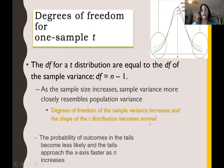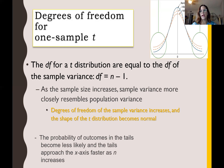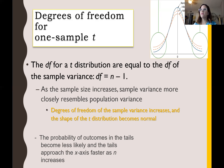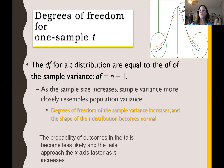An important thing to think about is our degrees of freedom, because now we're really relying on degrees of freedom since we don't have that population variance. With the T statistic, our distributions are based on degrees of freedom, whereas with the Z test there was one distribution — the unit normal distribution. Now we have a distribution for every single sample size, which is every single degrees of freedom. Degrees of freedom is N minus one, and the sample distribution will resemble the population more and more as the sample size increases.